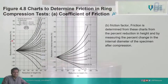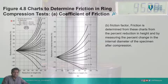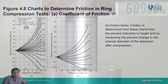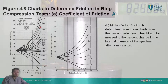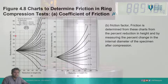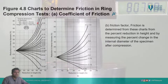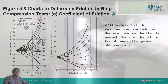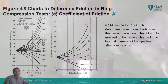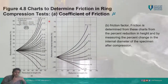On the chart, the x-axis shows reduction in height and the y-axis shows reduction in internal diameter, with friction coefficient lines plotted. Wherever your reduction values intersect determines your friction coefficient. For instance, if you have 40% reduction in diameter and 40% reduction in height, they intersect on a line corresponding to a friction coefficient of 0.057. This is how you get the friction coefficient in manufacturing processes.